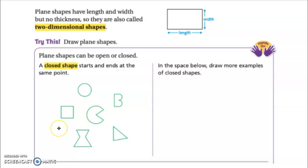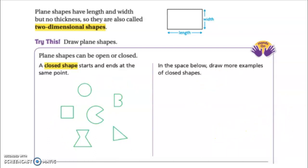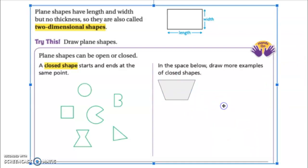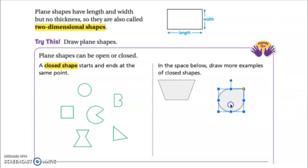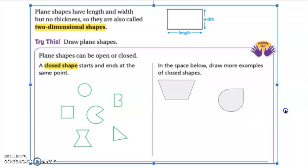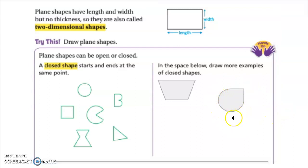We're going to look at the difference between a closed shape and an open shape. You're probably used to only seeing closed shapes — that's really what we mostly look at. A closed shape starts and ends at the same endpoint, so all of these are closed shapes because none of the sides are open. A closed shape can also have rounded edges; it doesn't have to be just straight lines.